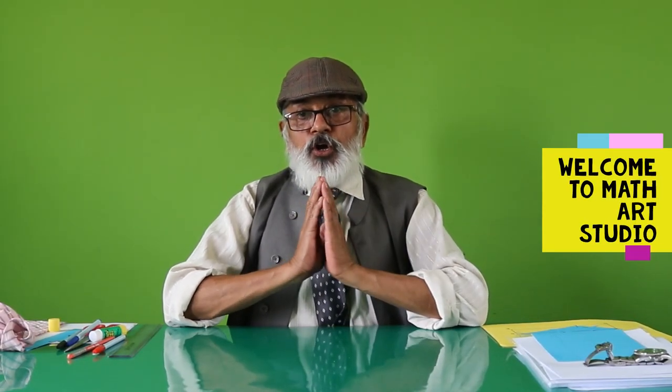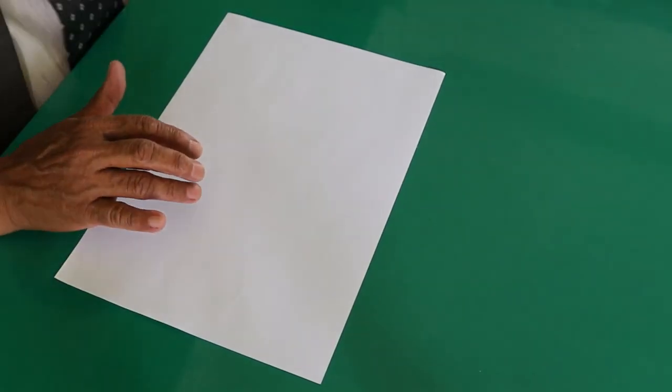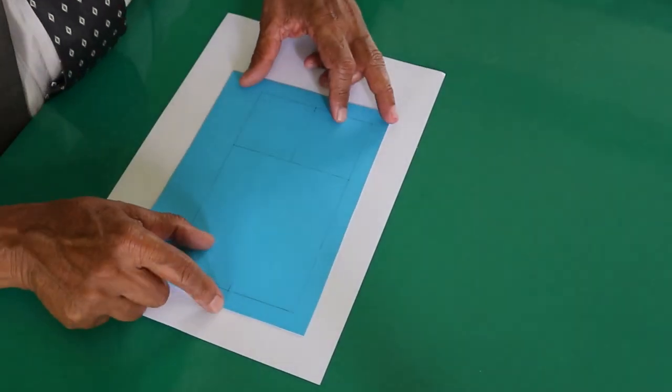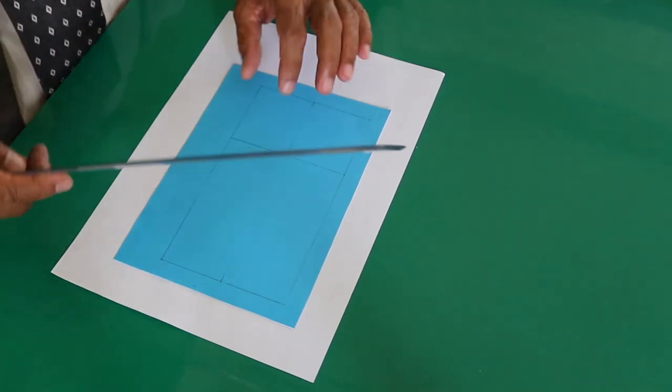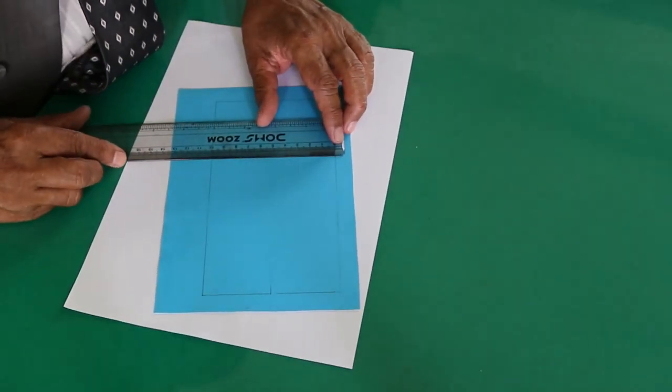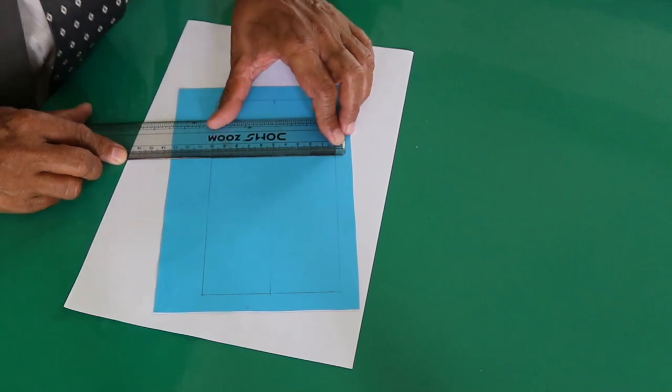Namaste my dear friends, welcome to Math Art Studio. Today I am going to discuss an alternative method for finding the area of a kite. Take a sheet of paper and draw a line segment of any length. Here I have a 10 cm long line.